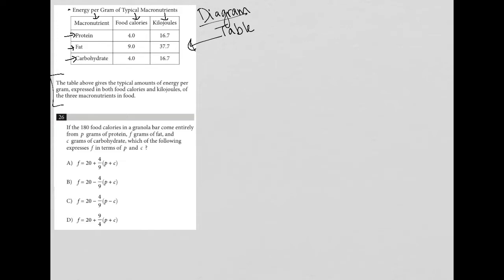So the information here just says the table above gives the typical amounts of energy per gram expressed in both food calories and kilojoules of the three macronutrients in food. Pretty much what we already discovered by exploring the table a little bit.